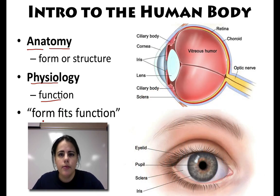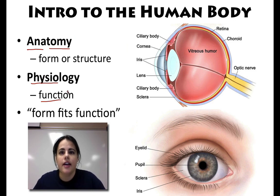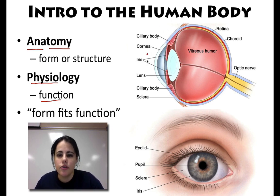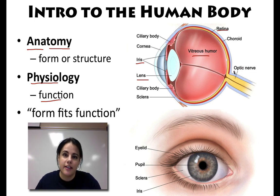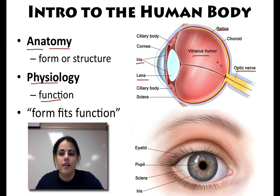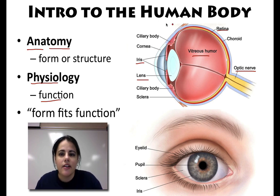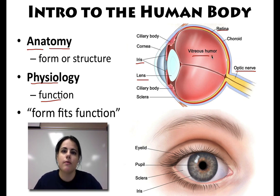Let's take a look at the human eye, for example. The human eye has a certain physiology — its physiology is for vision, to see things. And the anatomy allows it to perform its function appropriately. We have the iris, the lens, the retina in the back shaped with its curvature, fluid called the vitreous humor that reflects and refracts light entering the eye, and the optic nerve that sends images to the brain so the brain can perceive them. So anatomy will always fit physiology — form fits function.